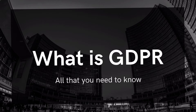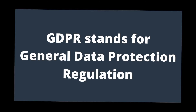The General Data Protection Regulation, or GDPR, is a regulation in European Union law on data protection and privacy in the European Union and the European Economic Area. It has seven principles: lawfulness, fairness and transparency, purpose limitation, data minimization, accuracy, storage limitation, and integrity and confidentiality, as well as accountability.